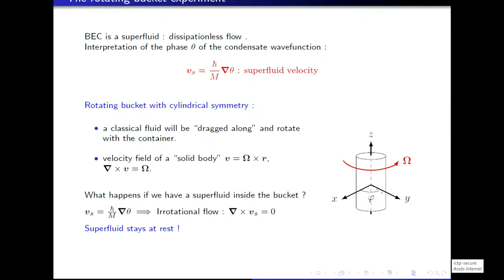I will say a word about one of the most important properties of BEC, which is its superfluid character. By superfluid, people typically mean that when you set the system into motion it will undergo dissipation-less flow — so without viscosity. That interpretation follows from interpreting ψ as a wave function: in the probabilistic interpretation of Schrödinger's equation, the gradient of the wave function is related to the current of the probability fluid. If I call θ the phase of the condensate wave function, then one can associate a superfluid velocity Vs = ℏ/m × ∇θ. This is very similar to superconductors, where θ is the phase of the superconducting order parameter.